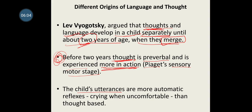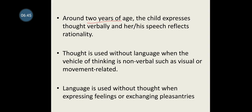Vygotsky said the child's utterances before two years are more automatic reflexes — like crying when uncomfortable — rather than thought-based. The child cries automatically when uncomfortable; there is no thought behind it. Around two years of age, the child begins to express thought verbally and speech starts to reflect rationality. After two years, a child's thoughts are verbally expressed.